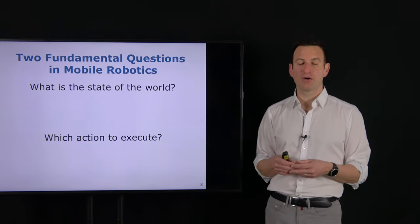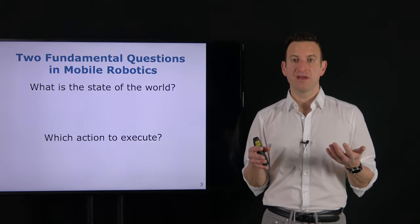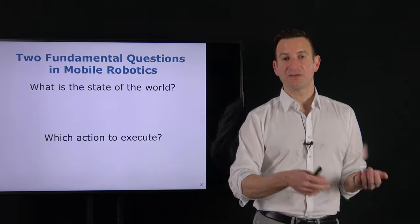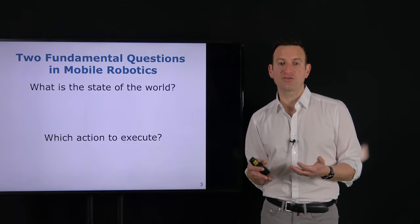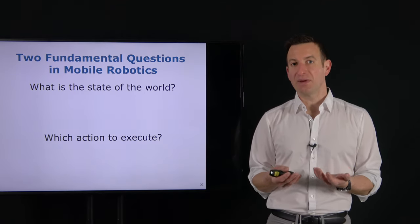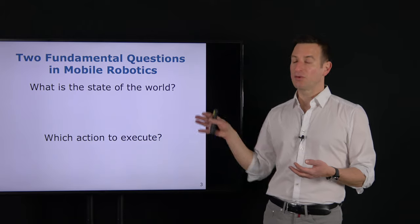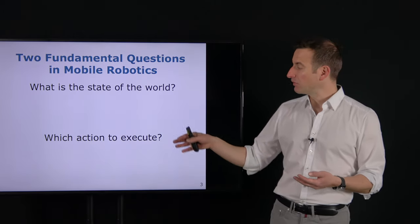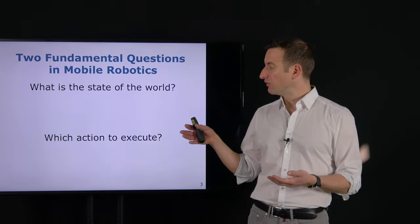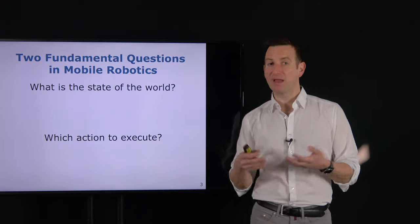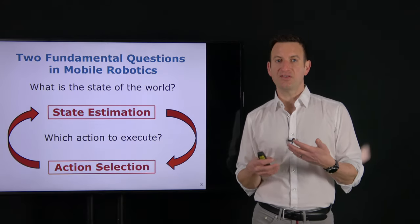There are two fundamental questions in mobile robotics. The first is: what's the state of the world? — meaning the environment of the platform, the state of the platform itself, and all relevant parameters. The second key question is: which action to execute? This depends on the goal of the autonomous system. These two functions are coupled: to know what to do, I need to know what the world looks like, and a given action may impact the state of the world.